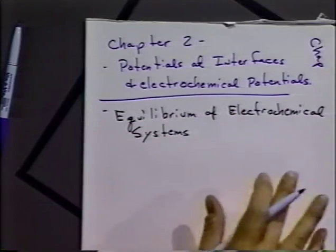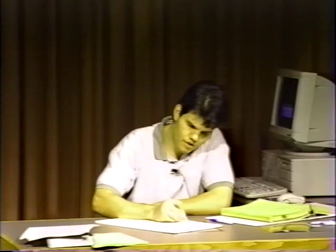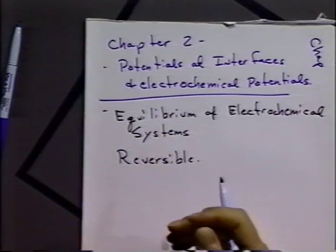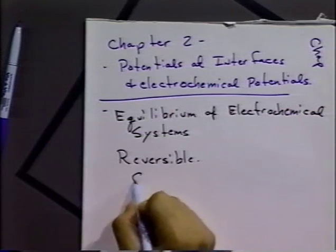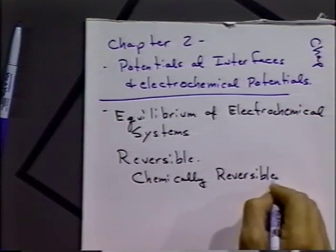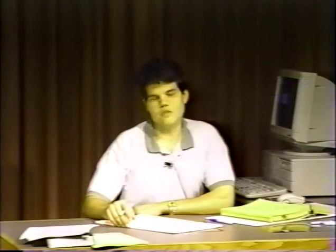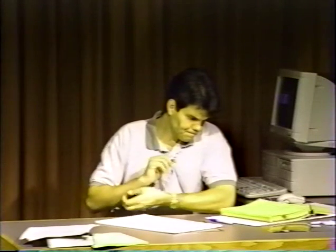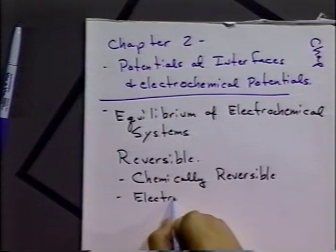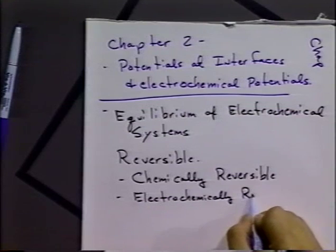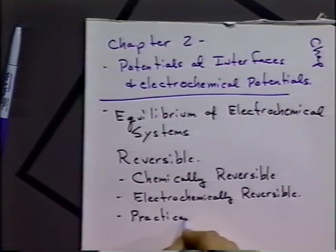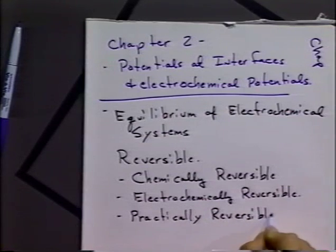So let's discuss the idea of equilibrium first, especially as it pertains to electrochemical systems. In electrochemistry, when we talk about equilibrium, we talk about reversible systems. We're going to discuss what we mean by reversible first. The first idea is the fact that a system may or may not be chemically reversible, and this is a requirement for equilibrium to be true. Also, we need to have a system that may be electrochemically reversible. But often, we'll be happy and satisfied with a system that's practically reversible.